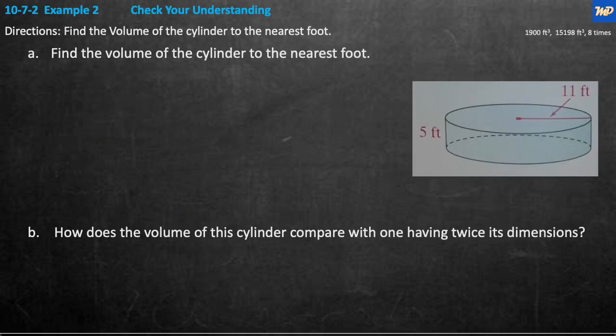Example 2, check your understanding. Find the volume of a cylinder to the nearest foot. It's a two-part question. The first one is just that same direction: find the volume of the cylinder to the nearest foot. Part B: how does the volume of the cylinder compare to one having twice its dimensions? If you remember, that's similar to the one we did with the surface area question. It's the same concept but not the same number. Go ahead and pause the video, work these out, and then we'll come back and do them together.